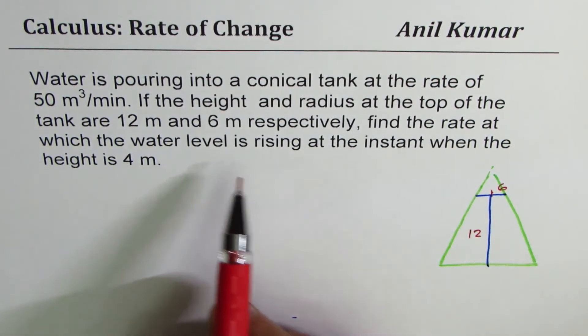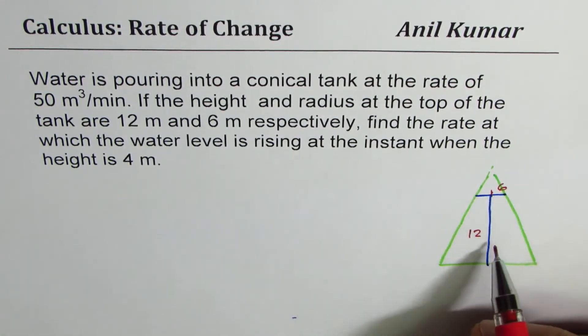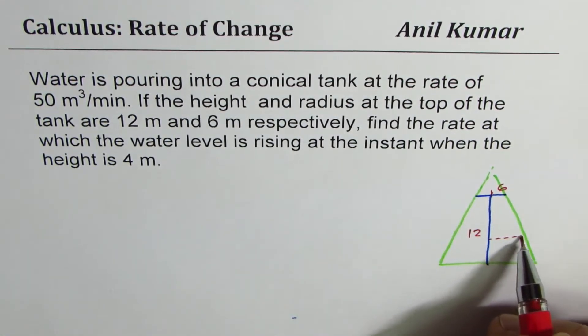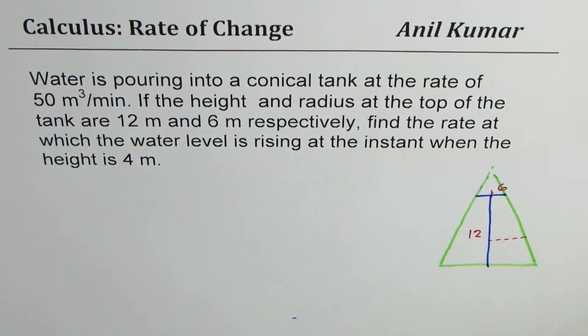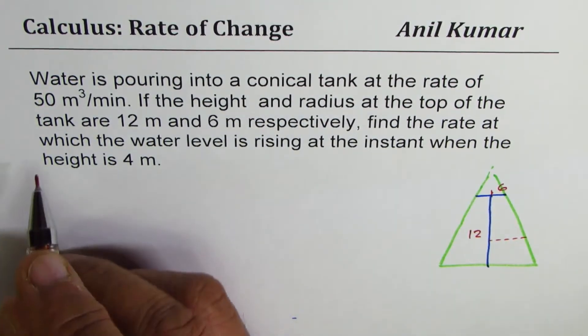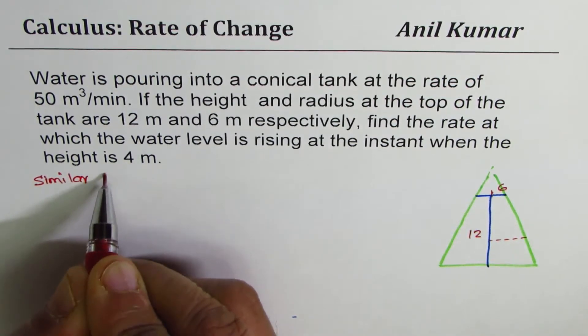Find the rate at which the water level is rising at the instant when height is 4. It says when height is 4, at that time, find the rate. So whenever you have a question related to conical tank, we normally use similar triangles to find the relation. This is very important to understand - similar triangles.